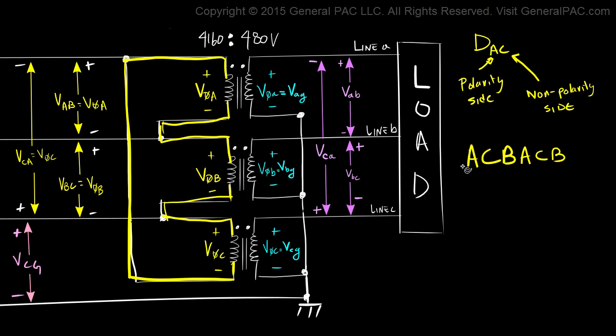So the first pattern is this right here. The polarity side of winding A is connected to the non polarity side of winding C. This is the second pattern and what we are saying is that the polarity side of winding B is connected to the non polarity side of winding A.